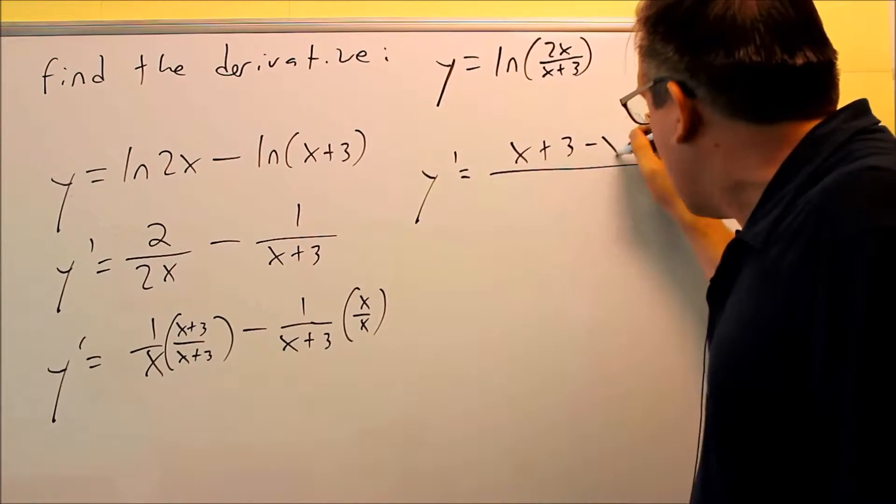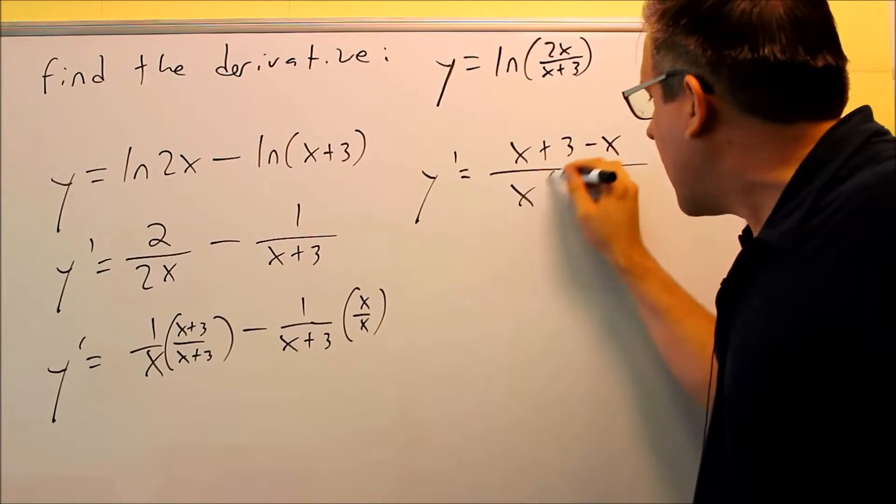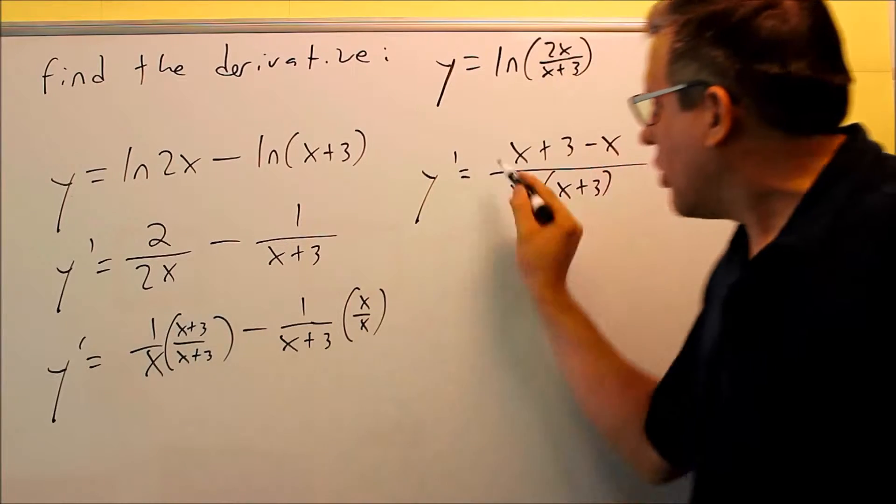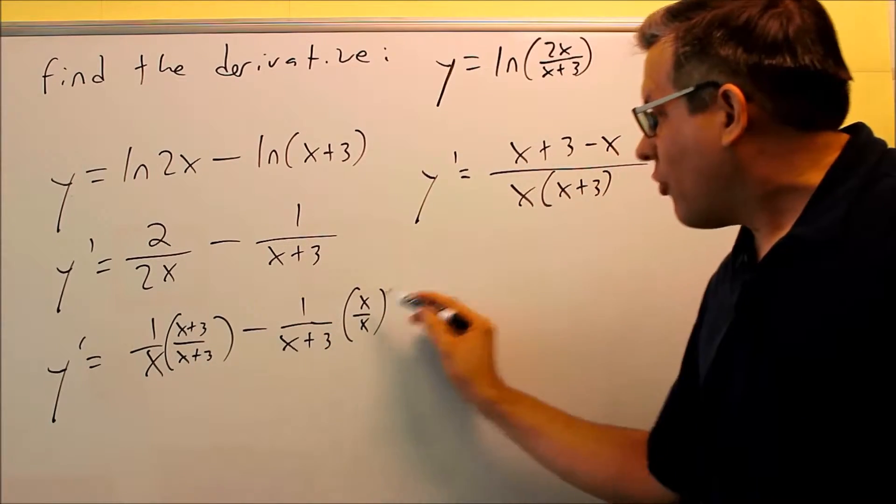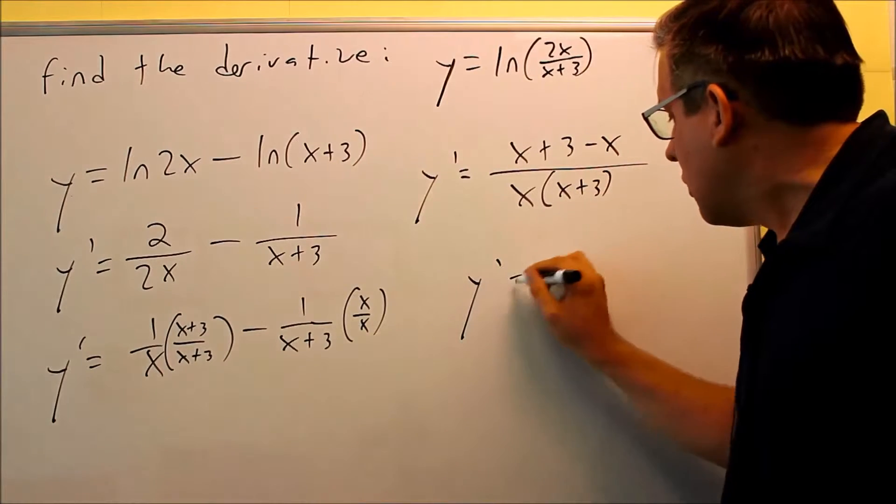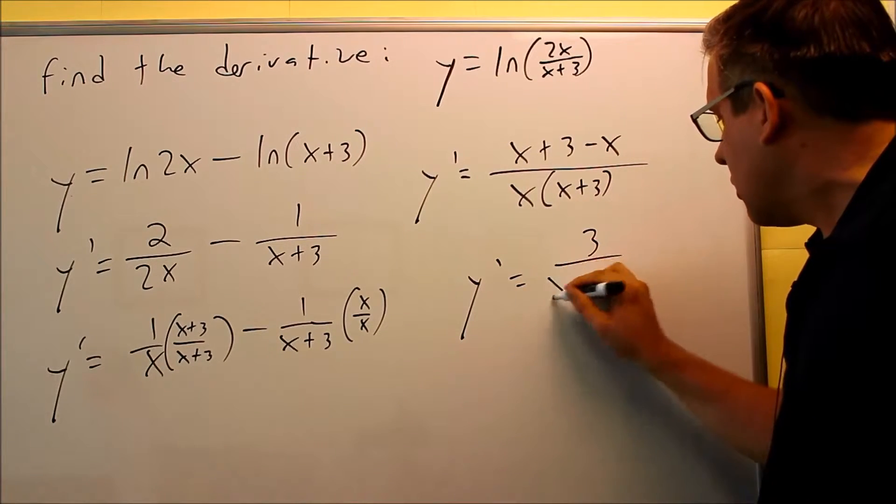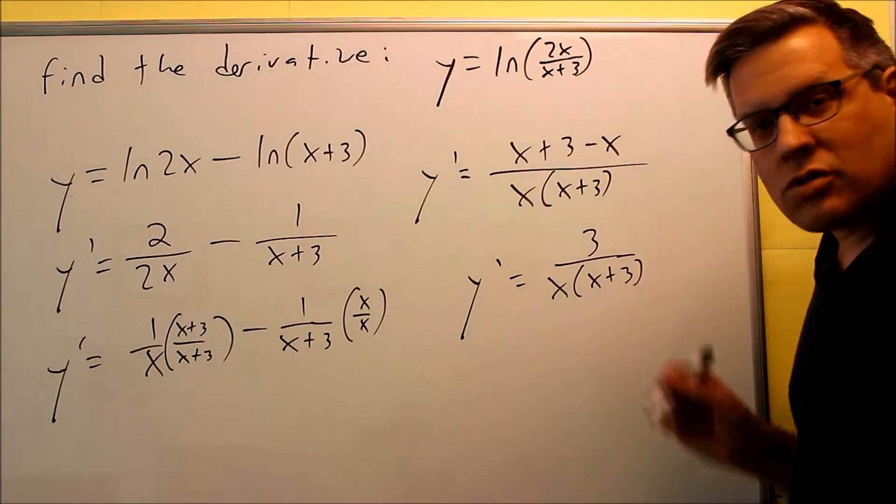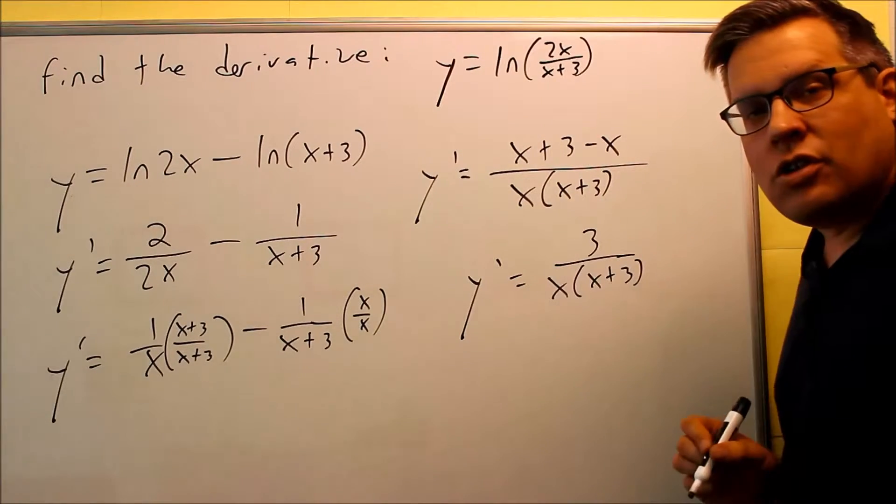So x plus 3 minus x we have across the top. On the bottom, we have our common denominator, x times x plus 3. So again, 1 times all that. The minus sign, don't forget. And then since the x's cancel, that means you can write your answer as this. The x's cancel, you get a 3 on top, and then that's as far as you need to go with your answer.